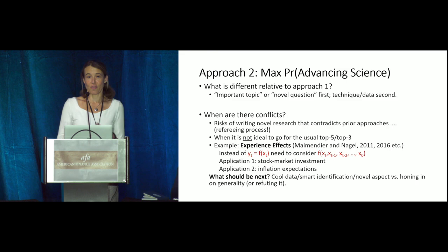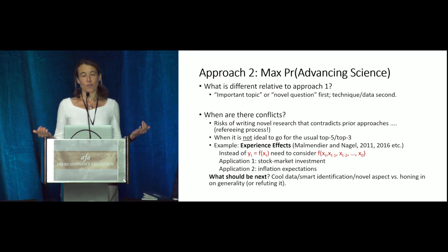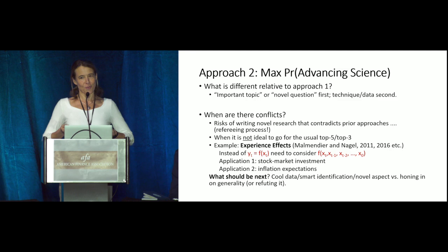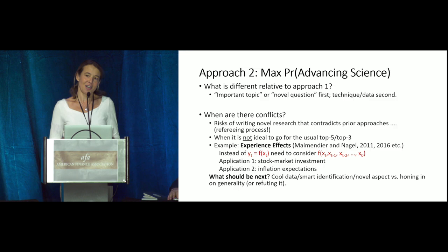There are real conflicts in choosing disruptive research. One is risk: if decades of research have tried to rationalize why CEOs do acquisitions that get negative market reactions, and you come along and say CEOs are simply overconfident — that paper will be sent to referees deeply vested in asymmetric information and incentive misalignment explanations. It will make your life hard. Our refereeing process inherently disadvantages disruptive work, and that's something I unfortunately have to acknowledge.